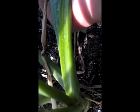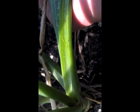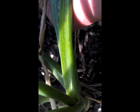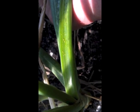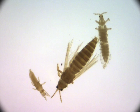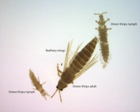Onion thrips are among the smallest insects but can still be seen with the naked eye. Here is a view through a stereomicroscope of thrips in different life stages. Typically adults are dark, and the younger thrips are, the lighter they are. Adults have wings and nymphs are wingless.